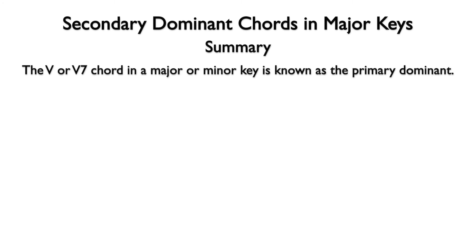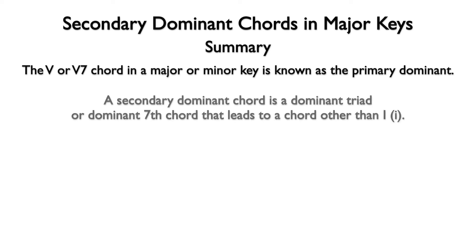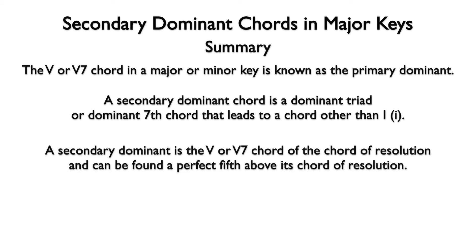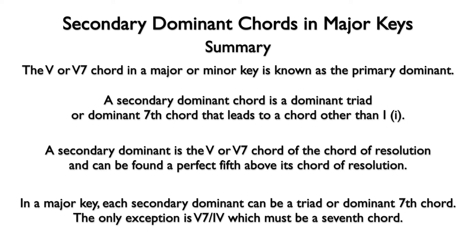Let's summarize. The five or V7 chord in a major or minor key is known as the primary dominant. A secondary dominant chord is a dominant triad or dominant seventh chord that leads to a chord other than one. A secondary dominant is the five or V7 chord of the chord of resolution and can be found a perfect fifth above its chord of resolution. In a major key, each secondary dominant can be a triad or dominant seventh chord. The only exception is V7 of four, which must be a seventh chord.